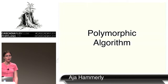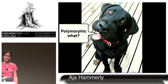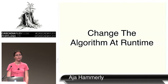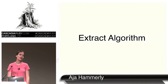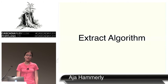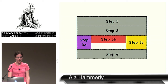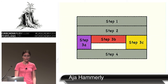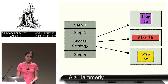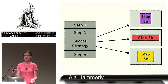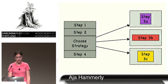Strategy is a way of changing the algorithm at runtime — it's a way of doing an 'extract algorithm.' If you know about extract method or extract class, extract algorithm is what you do with strategy. We've got some basic code with a four-step process. Steps 1 and 2 are common, some crazy stuff happens in step 3, and step 4 is common. With strategies, steps 1, 2, and 4 stay together, and we call out to separate classes for step 3A, 3B, or 3C.